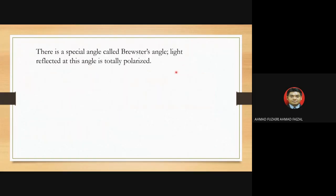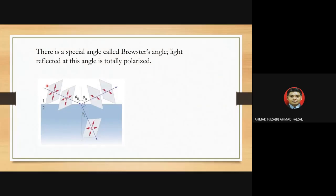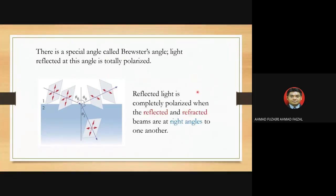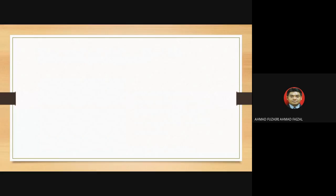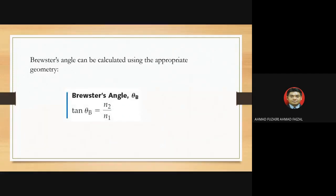There is a special angle called Brewster's angle, where reflected light is totally polarized. Reflected light is completely polarized when the reflected and refracted beams are at right angles (90 degrees) to one another. Theta B is the Brewster angle; the direction of polarization is parallel to the reflecting surface. Brewster's angle can be calculated using: tangent theta B = n2/n1.